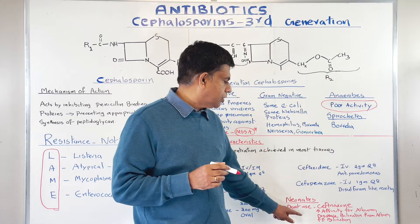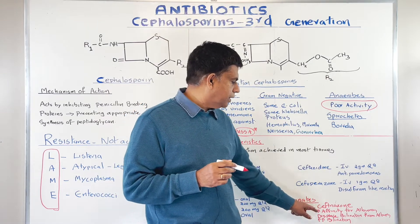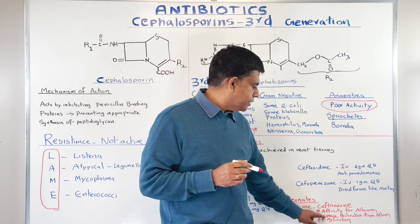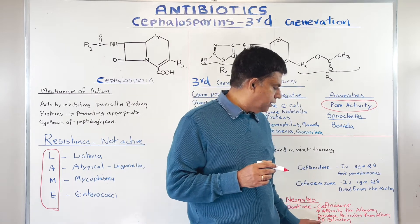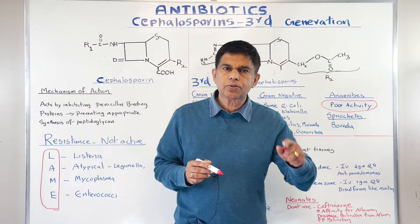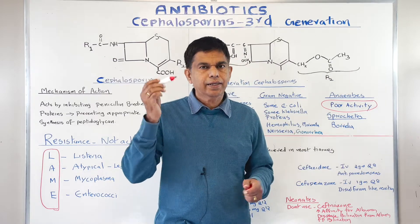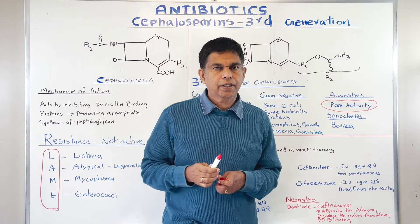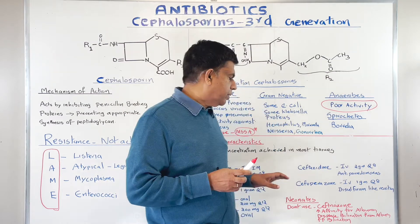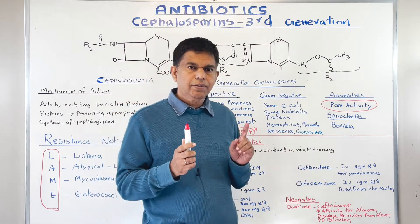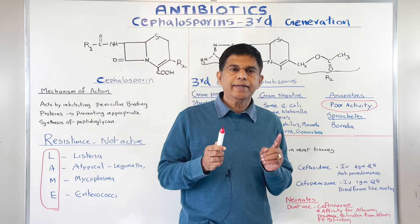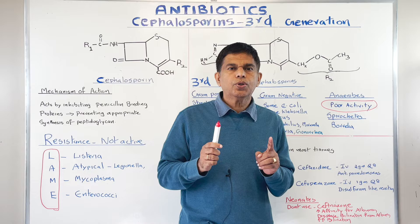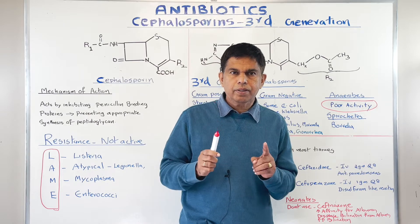Remember: ceftriaxone — do not use in the neonate. It increases the affinity for albumin and displaces bilirubin from albumin, resulting in increased bilirubin. In the brain it can get deposited, and kernicterus and other complications can happen. One more thing ceftriaxone does: concentration gets very high in bile, and it combines with calcium — you can get pseudolithiasis. Those are the two adverse events.